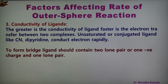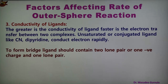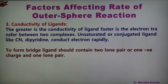The third factor is the conductivity of the ligand, which is also very important because electron transfer takes place through the bridge ligand. The greater the conductivity of the ligand, the faster is the electron transfer from one complex to another. Unsaturated or conjugated ligands like cyanide or bipyridine conduct electrons rapidly. The bridge ligand should contain two lone pairs, or one negative charge and one lone pair, so that electron transfer can take place through the bridge ligand.